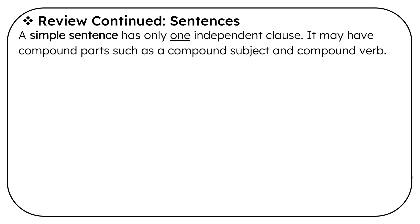A simple sentence has only one independent clause. It may have compound parts such as a compound subject and compound verb. He built the house. We could say he and she built the house and it would still be a simple sentence.